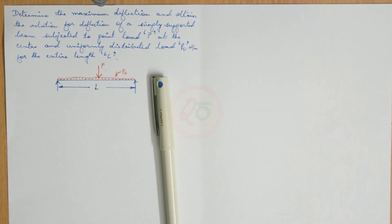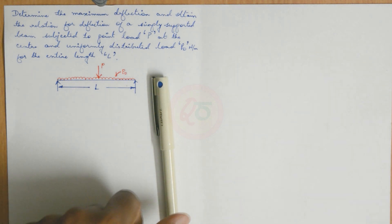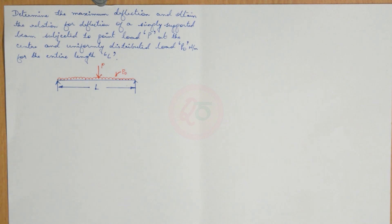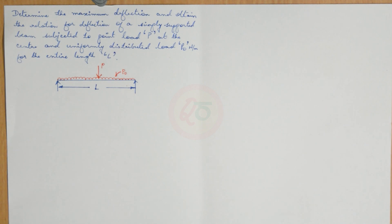Hello everyone, greetings from Quest 0. Today we will continue our sessions on the Rayleigh-Ritz method and we have taken up a problem based on a subscriber request. Before we proceed with the solution, I request all of you to subscribe to the channel if you have not done so, because this is the percentage of unsubscribed viewers that I have versus the very meager amount of subscribed viewers. So please do subscribe — we are not going to lose anything with it. Thank you, so we will proceed with the solution.